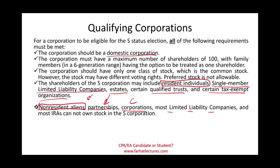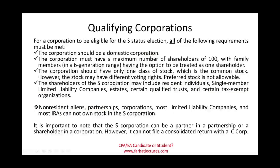If an ineligible party acquires stock — such as a shareholder selling shares to a partnership or to a non-resident alien cousin in Europe — the corporation loses its S status immediately. An S corporation, however, can be a partner in a partnership or a shareholder in another corporation. But a partnership or C corporation cannot own the S corporation, and an S corporation cannot file a consolidated return with a C corporation.